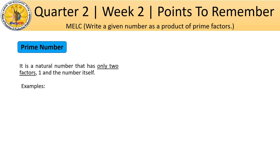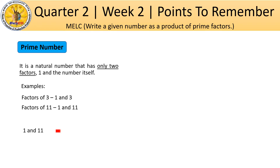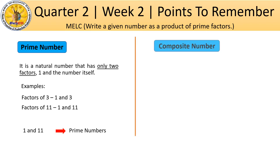Look at examples. The factors of 3 are 1 and 3. The factors of 11 are 1 and 11. You can see these numbers have only two factors, one and the number itself. 3 and 11 are called prime numbers. Now, let's move on to composite numbers.